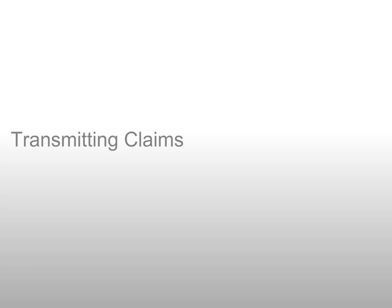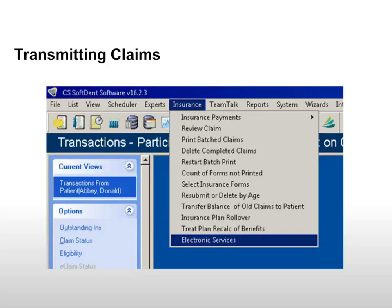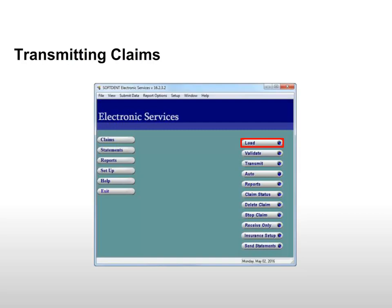Transmitting Claims. After you submit claims, you must load, validate, and transmit the claims. From the main menu, select Insurance, then Electronic Services. The Electronic Services window is displayed. Click Load to display a list of claims that have been submitted to the batch.